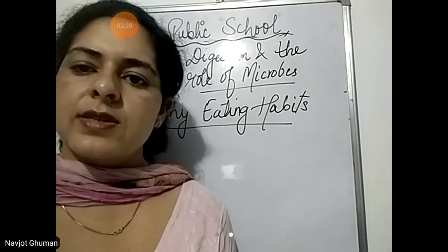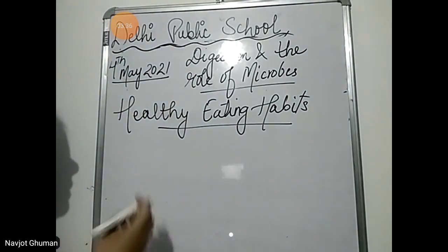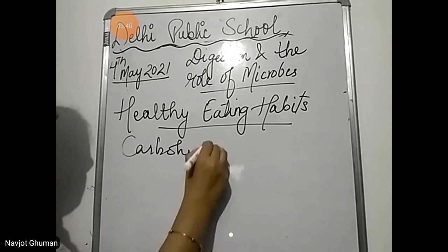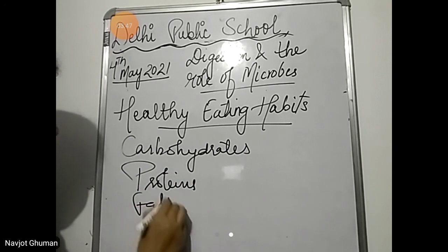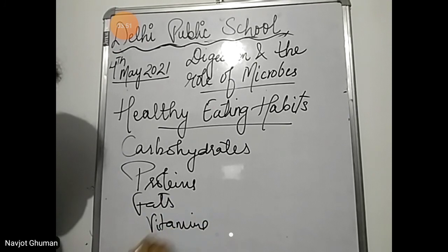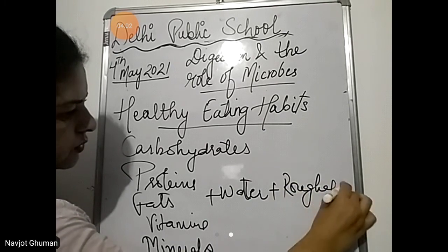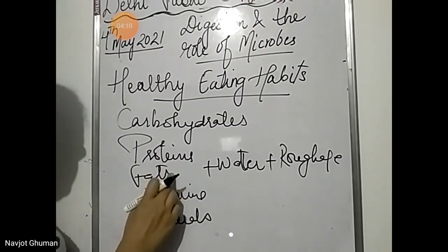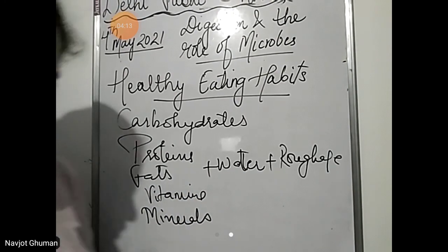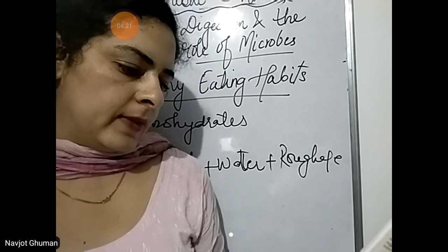Always try to eat a balanced diet — a diet which contains all five nutrients: carbohydrates, proteins, fats, vitamins, minerals, water, and roughage. Always try to eat a balanced diet so that your body does not become deficient in any component of food.